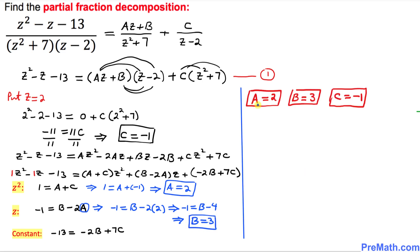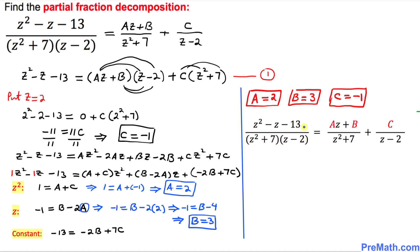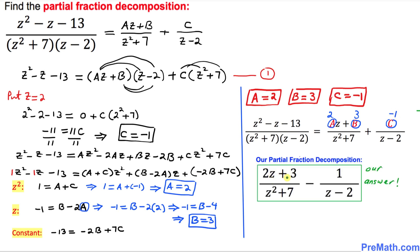We have successfully found all values: a equals 2, b equals 3, and c equals negative 1. Our partial fraction decomposition is now complete — we replace a with 2, b with 3, and c with negative 1 to get the final answer. Thanks for watching.